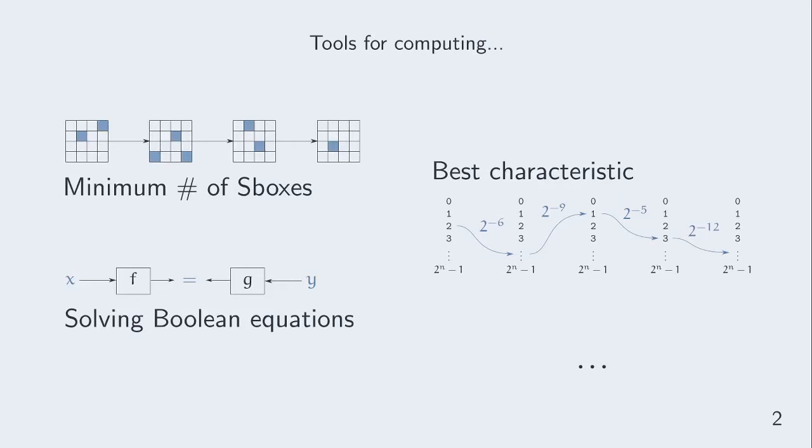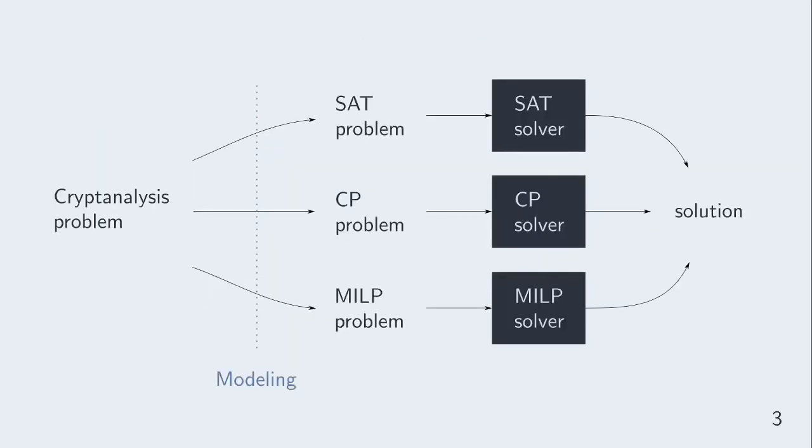However, such computations can be hard problems and cryptographers do not want to spend time reinventing the wheel. A common trend in symmetric key cryptography for solving such problems is to benefit from the high performance of SAT, constraint programming, or MILP solvers to do much of the computation by turning a cryptanalysis problem into a SAT, CP, or MILP problem.